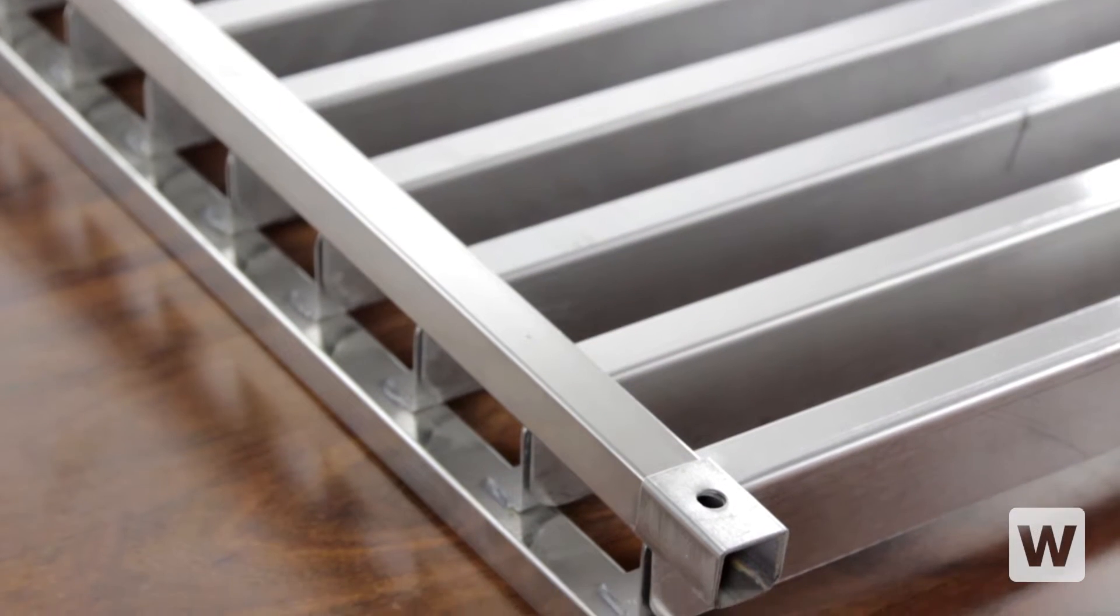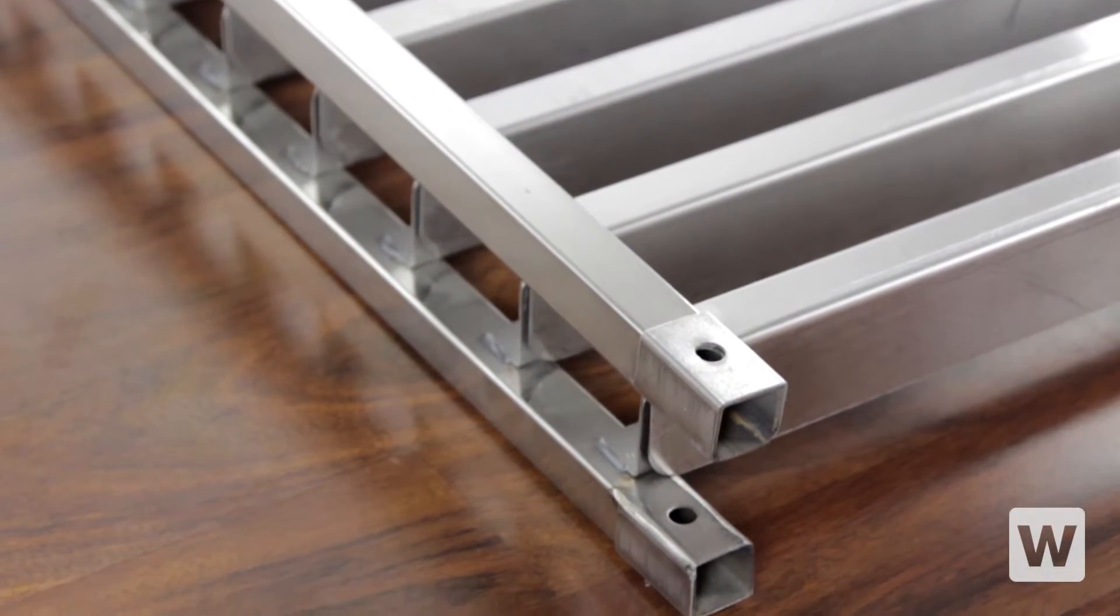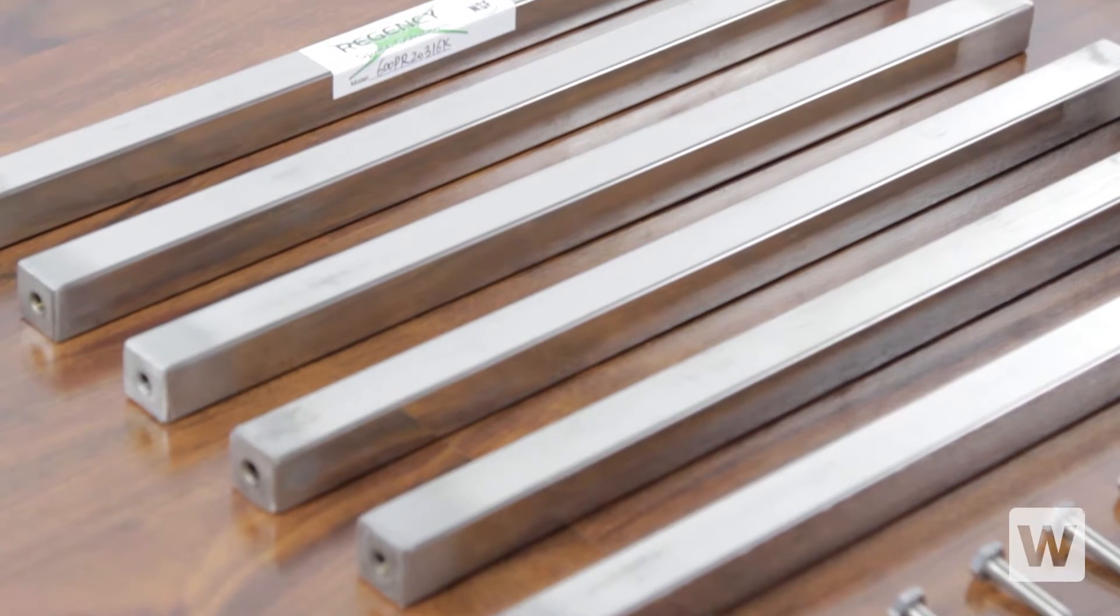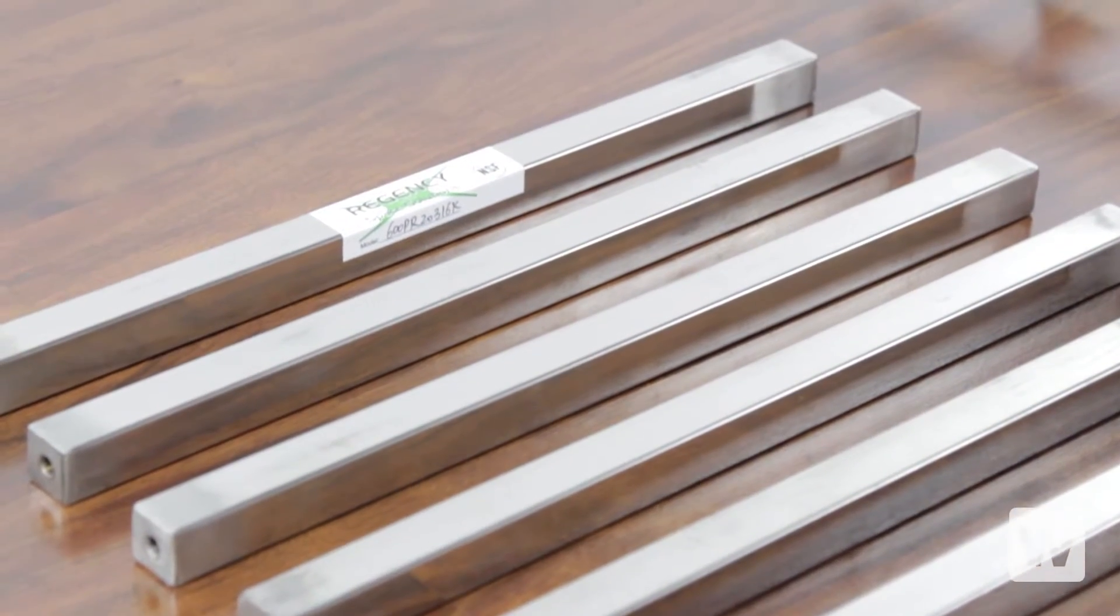The Regency Stainless Steel Bun Pan Rack has 16 gauge type 430 stainless steel slides and 20 gauge 1 inch OD square tubing for long lasting performance.